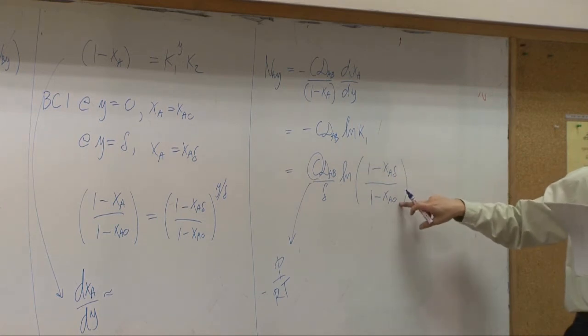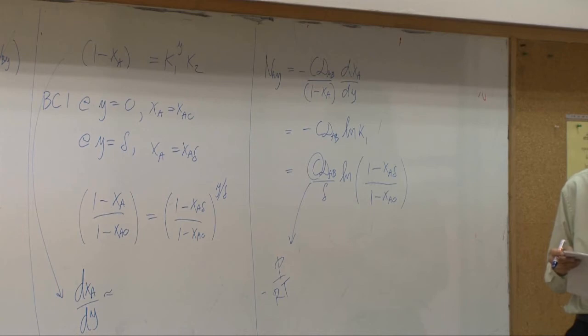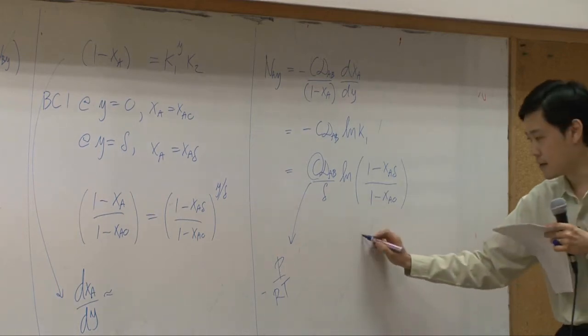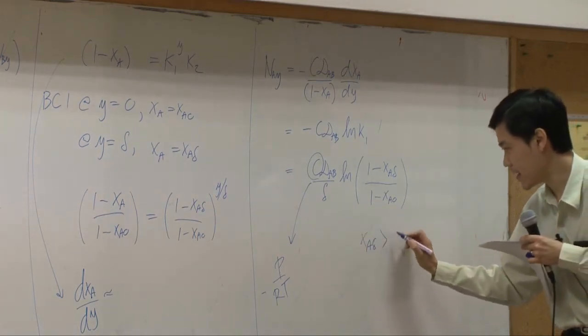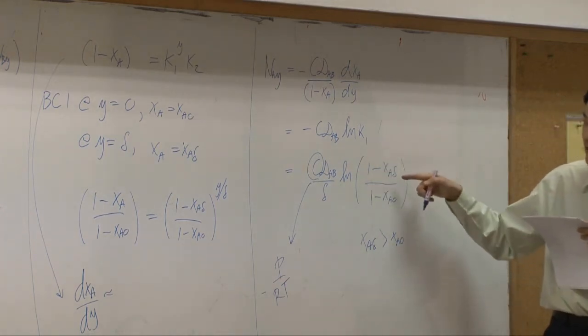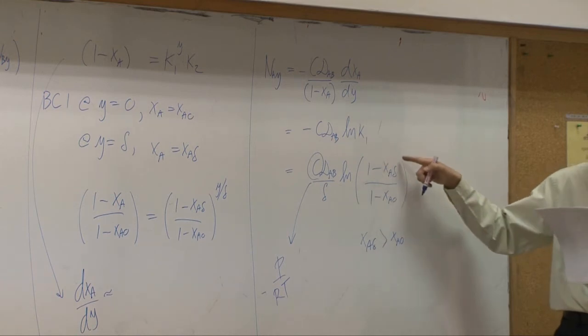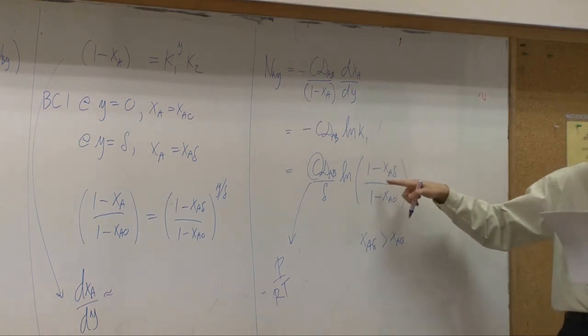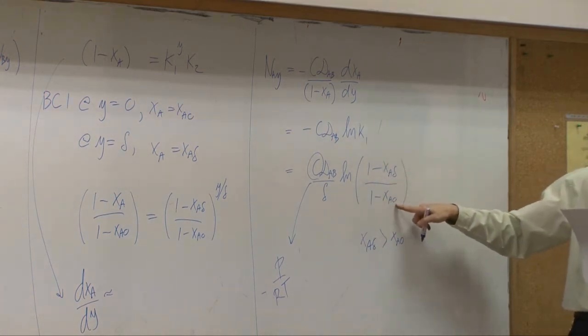Xa delta and Xa zero. Which one is greater? Xa delta is greater than Xa zero. So that means everything here, the nominator is less than one. Denominator is also less than one.